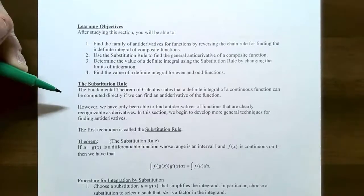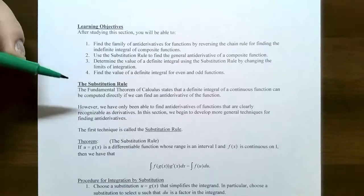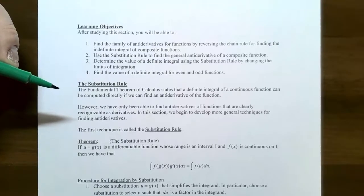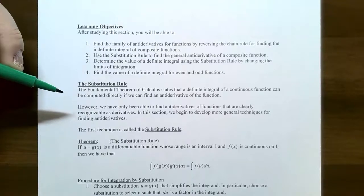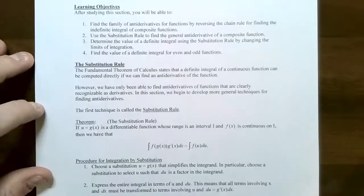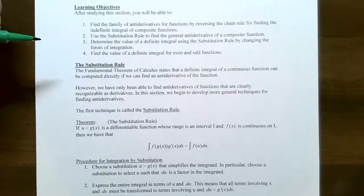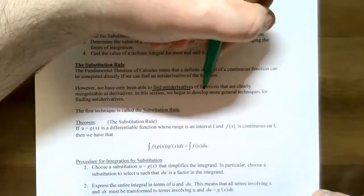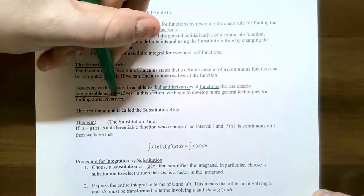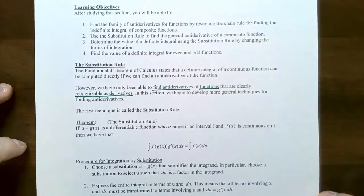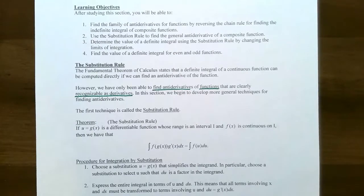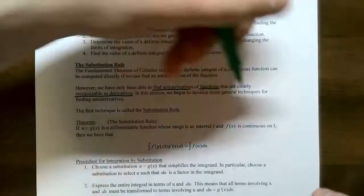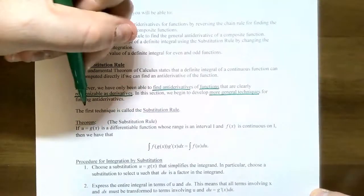The fundamental theorem of calculus states that a definite integral where the function is continuous can be computed if you know the antiderivative of a function. We haven't talked about finding antiderivatives for functions that are not as recognizable as derivatives. This is where reversing the chain rule comes in — we want to be able to find more general techniques on how to find antiderivatives.